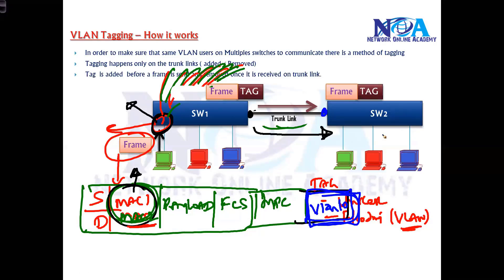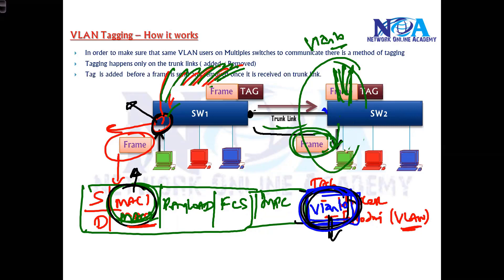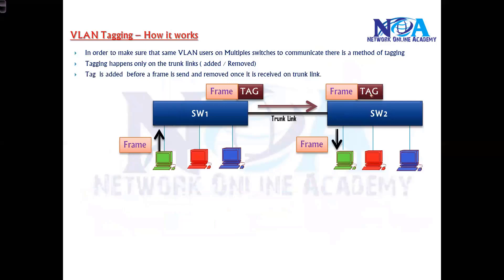When Switch 2 receives the frame, it receives it in the form of a frame with a tag. By reading the tag, it recognizes that this frame belongs to VLAN 10, which means it needs to send this packet only to the ports within VLAN 10 — not to everyone. If the destination is unknown, it floods to all ports in VLAN 10; if known, it forwards to a specific port based on the MAC table. But when sending to the end device, it removes the tag.